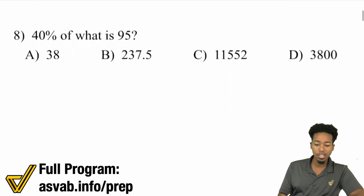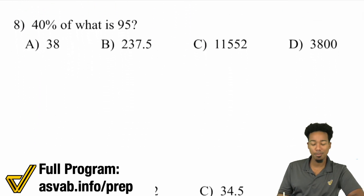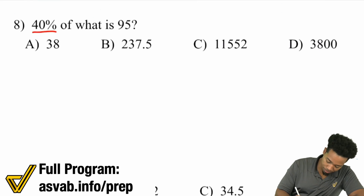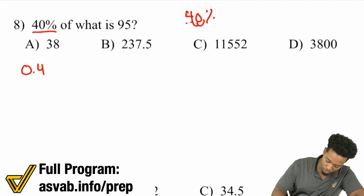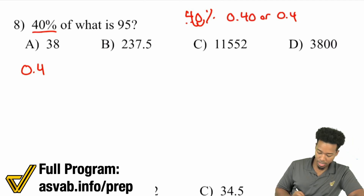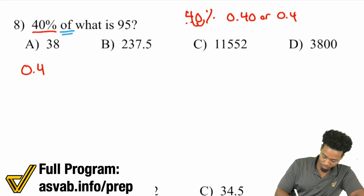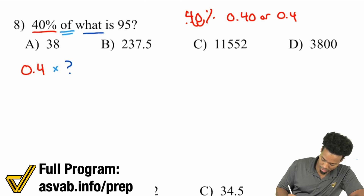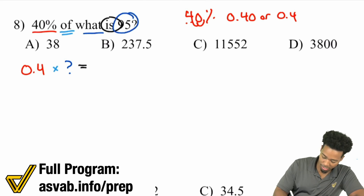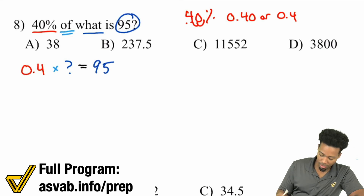Let's check out the last problem and then we're going to call it a day. We have 40%, the same as 0.4 or 0.40, of what equals 95.